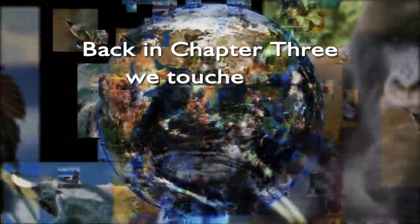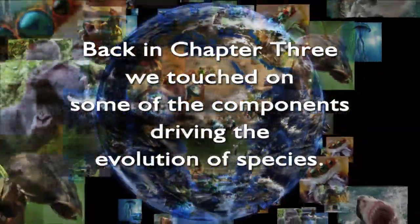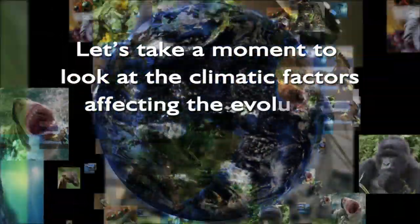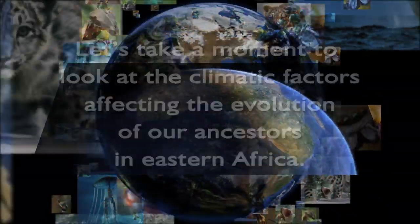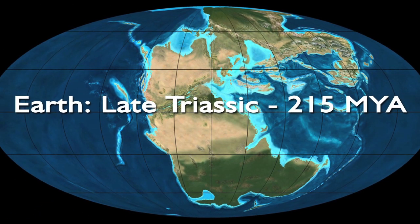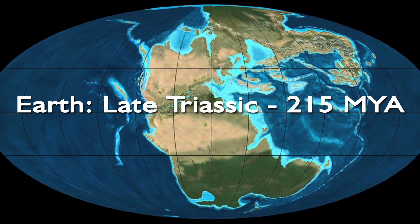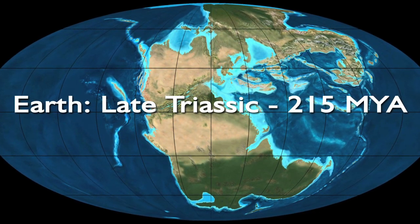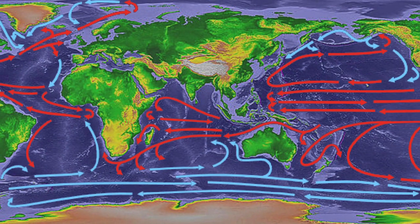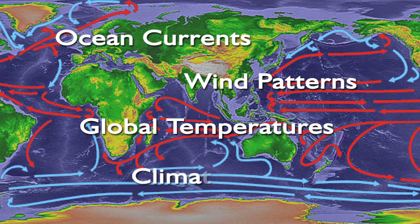Before we begin our look at Australopithecus, let's take a moment to digress. Back in chapter 3 we touched on some of the components driving the evolution of species. Let's take a moment to look at the climatic factors affecting the evolution of our ancestors in eastern Africa. Across the millions of years of Earth's history, one of the most important factors driving evolution has been the ever-changing surface of the Earth. Via plate tectonics and continental drift, the Earth itself is evolving. The movement of land masses causes changes in ocean currents, wind patterns, global temperatures, and climatic conditions over thousands and millions of years.